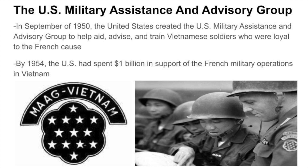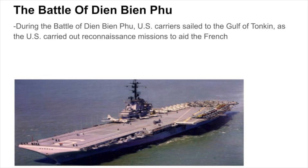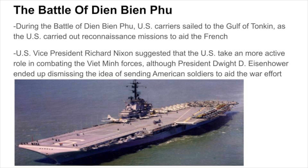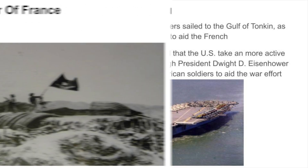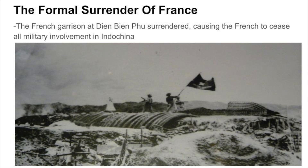By 1954, the U.S. had spent $1 billion in support of French military operations in Vietnam. During the Battle of Dien Bien Phu, U.S. carriers sailed to the Gulf of Tonkin as the U.S. carried out reconnaissance missions to aid the French. U.S. Vice President Richard Nixon suggested the U.S. take a more active role in combating the Viet Minh forces, although President Eisenhower dismissed the idea of sending American soldiers. Shortly after, the French garrison at Dien Bien Phu surrendered, causing the French to cease all military involvement in Indochina.